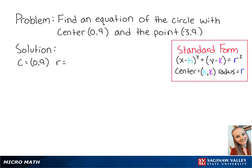The standard form of a circle shows us that the center is at (h, k). So here, our h is equal to 0 and our k is equal to 9.